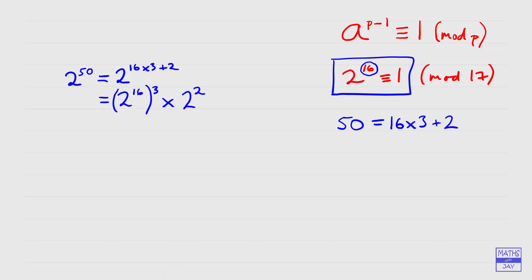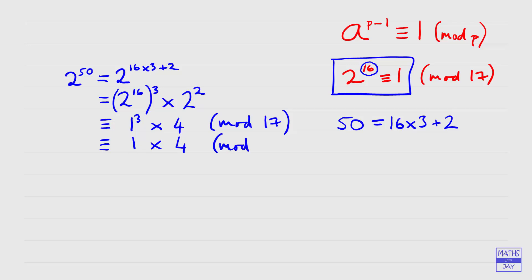Now using Fermat's Little Theorem: we know 2 to the power of 16 is congruent to 1, so we replace it with 1 — giving us 1 cubed times 2 squared, which is 1 cubed times 4, congruent in modulo 17. Then 1 cubed is 1, and 1 times 4 is 4. So Fermat's Little Theorem tells us that when we divide 2 to the power of 50 by 17 we get a remainder of 4, or the least residue of 2^50 in mod 17 is 4.